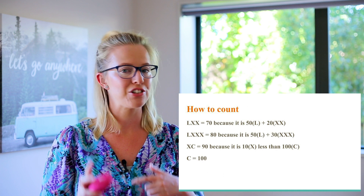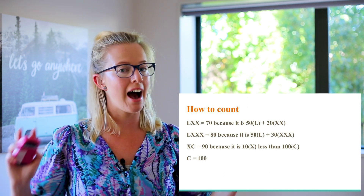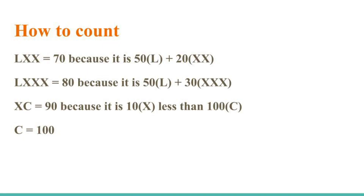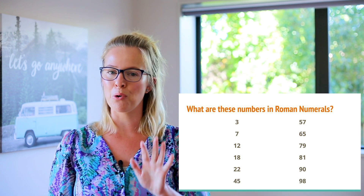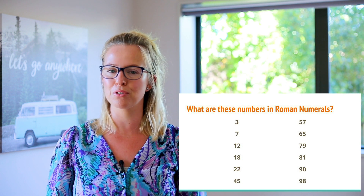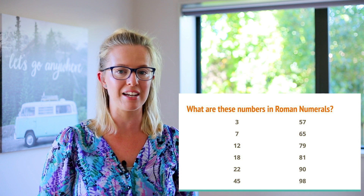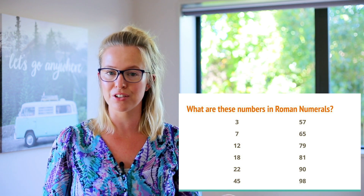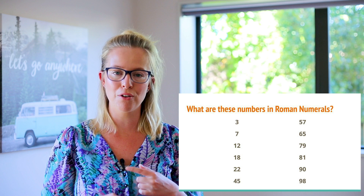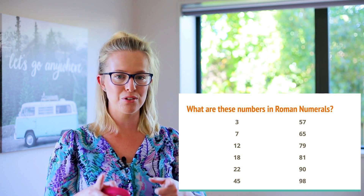Now the number ninety is where it changes again. For the number one hundred we use the Roman numeral C. So to make ninety, it is going to be ten before C. We know ten is X, so we put an X and then a C, which shows us that is ten numbers before one hundred, which equals ninety. I want you to pause the video here and see if you can write the Roman numerals for the familiar numbers on the screen — you can go back in the video, use the chart, or work with the people around you.